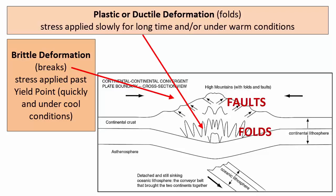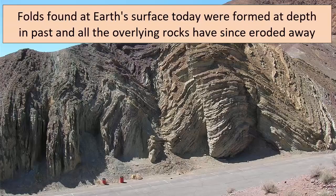Note: if folds happen at depth but we see those folded rocks at the surface, what does that mean? It means that all the rocks that were above the fold when it was forming have now been eroded away. The land is uplifted, and the older folded rocks are now exposed. We will come back to the topic of mountain building and erosion in later video tutorials.